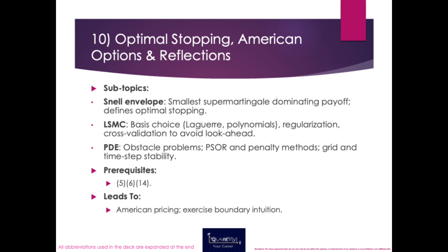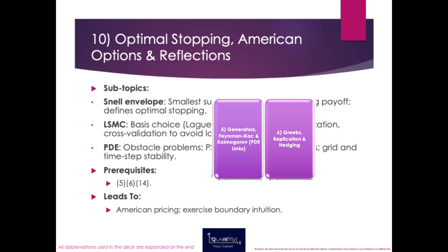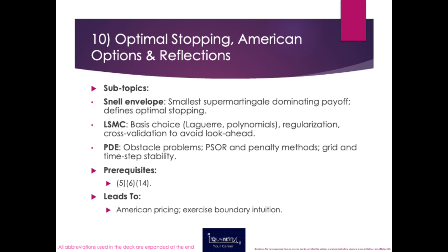Next is optimal stopping, American options, and reflections — the math of 'exercise now or wait' and how to value early-exercise features. Subtopics include the Snell envelope, continuation versus stopping regions, least-squares Monte Carlo, obstacle and penalty PDEs, and smooth-fit ideas. Prerequisites are topics five, six, and fourteen. This helps with practical American option pricing, extracting exercise boundaries, and communicating early-exercise risk.